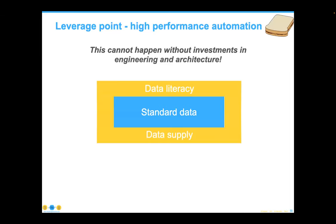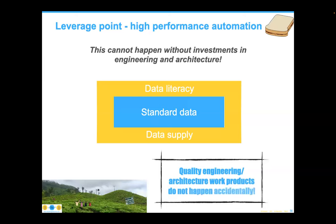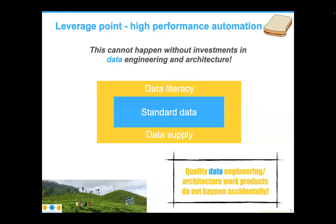As the quote notes: this cannot happen without investments in engineering and architecture. I went all the way to India at one point to see this sign hanging on the back of a tea farm: 'Quality engineering and architecture work products do not — cannot — happen accidentally.' The fact that they put that over a cash register at a tea farm in India tells me they understood that. And of course, if we add the word 'data' in there, it obviously still applies.